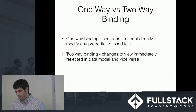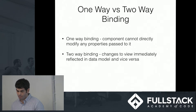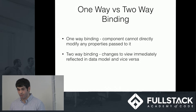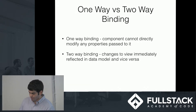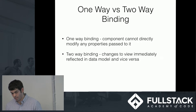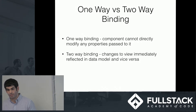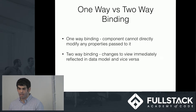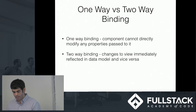React only has one-way binding, where properties are passed down from components and you're given callback functions to manipulate them. Vue allows you to use two-way binding, where changes to the view are immediately reflected in the data model and vice versa. Of course, you can do that in React, but it requires more code.